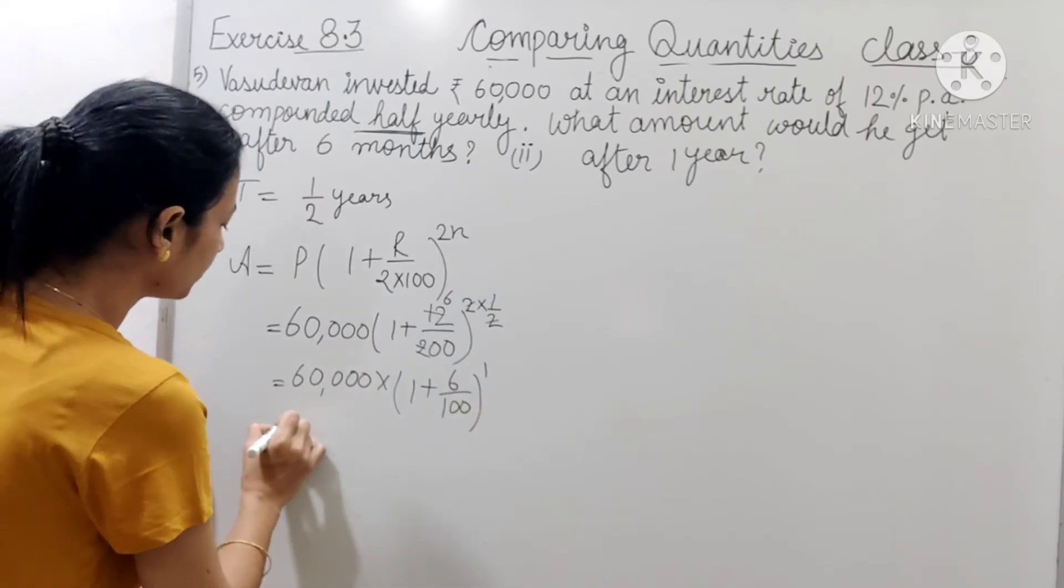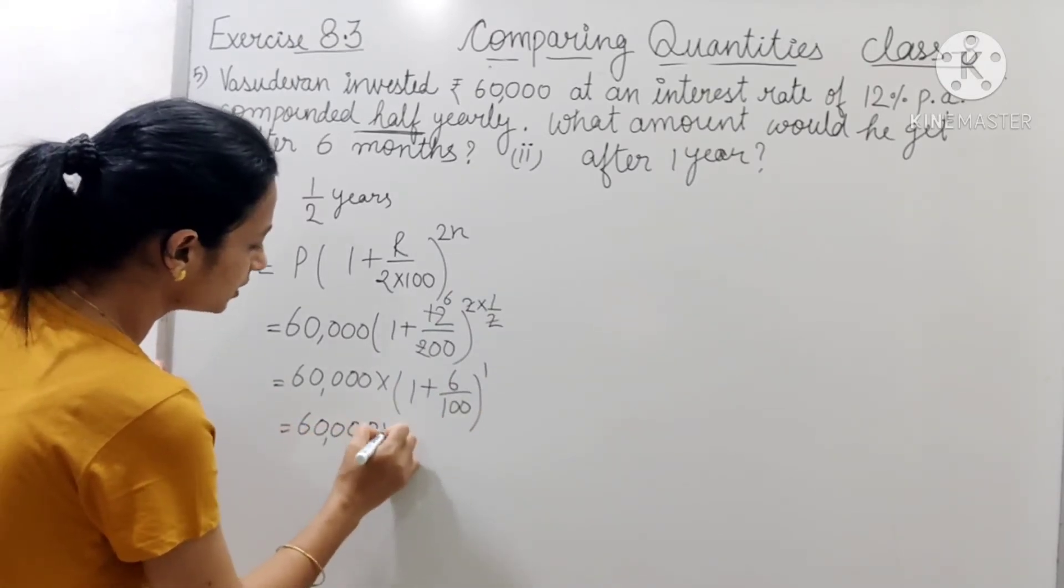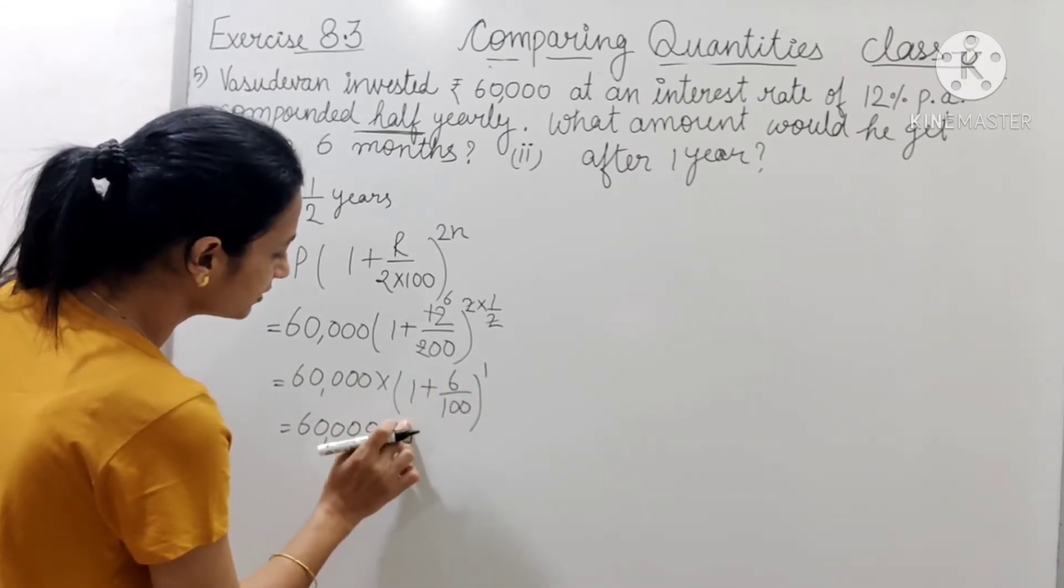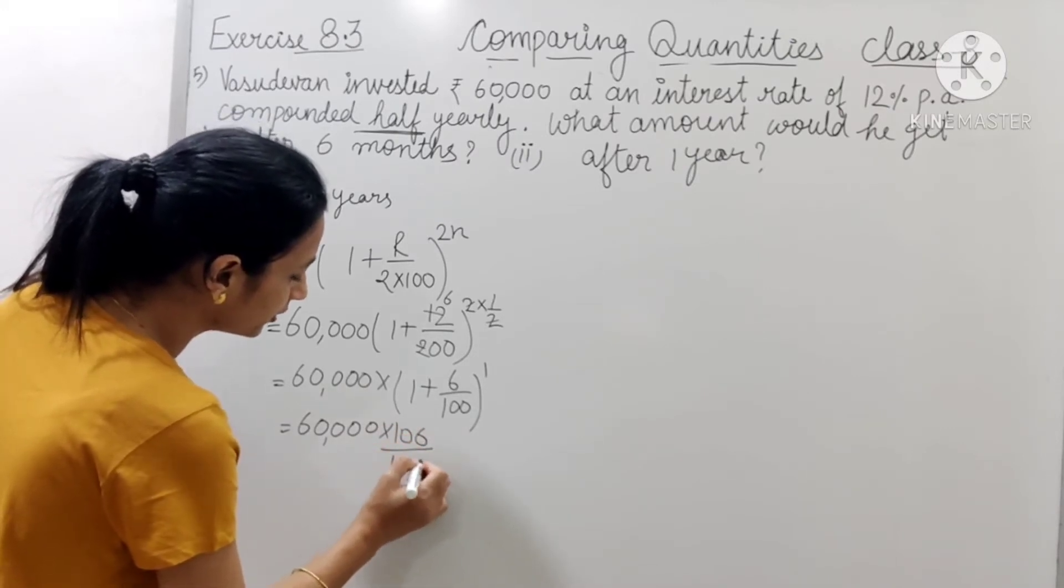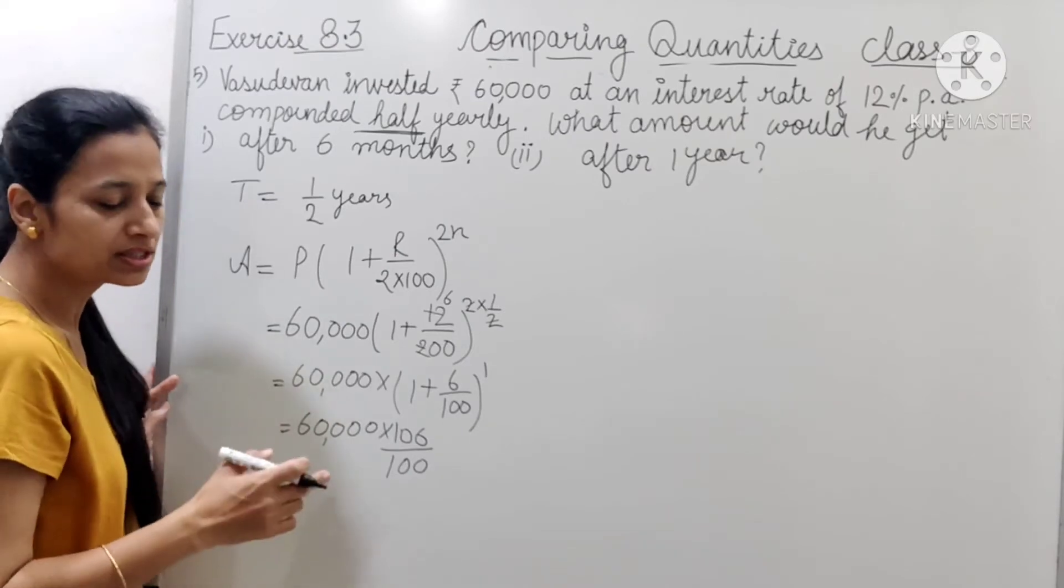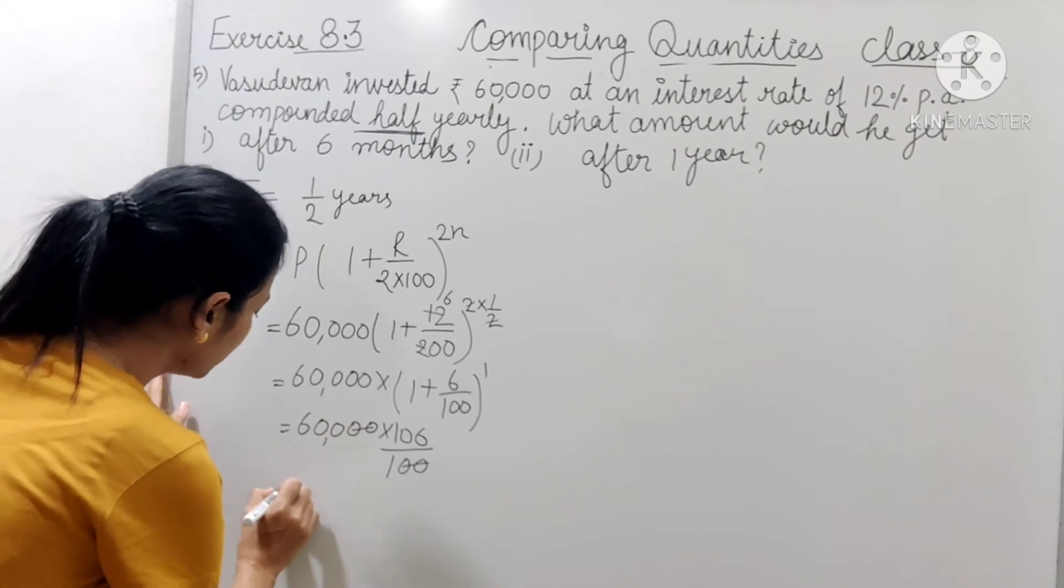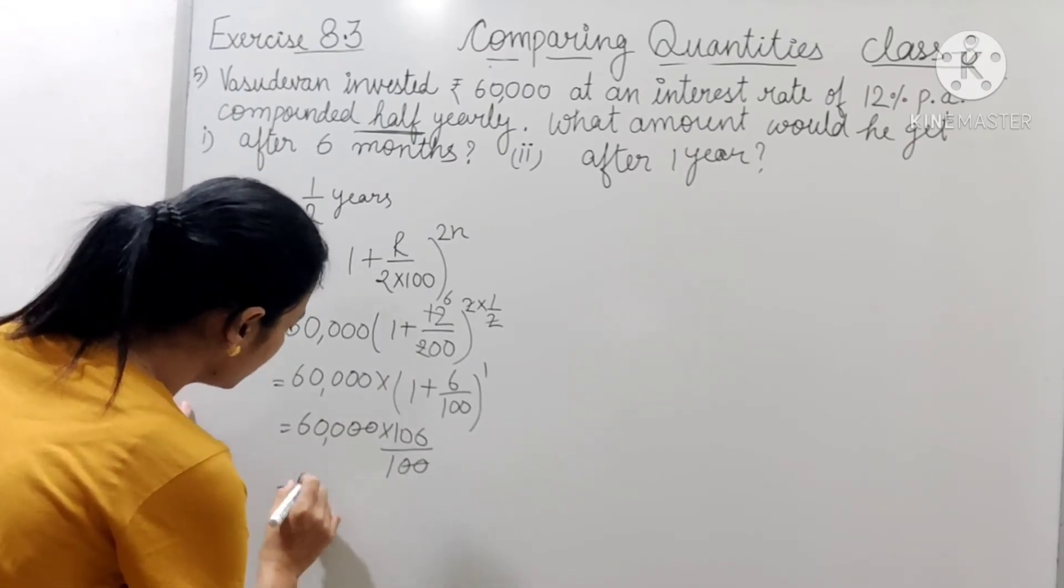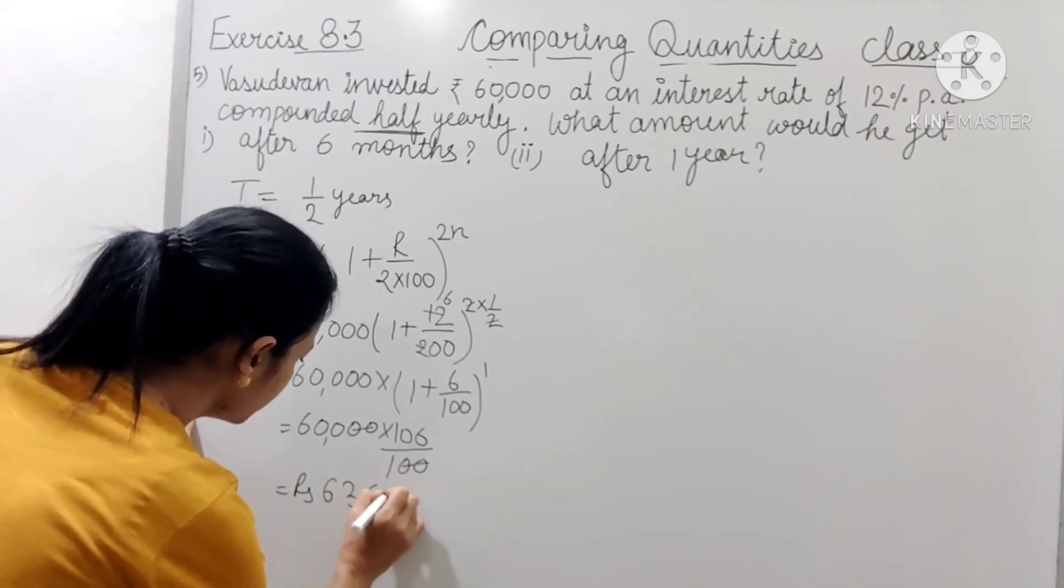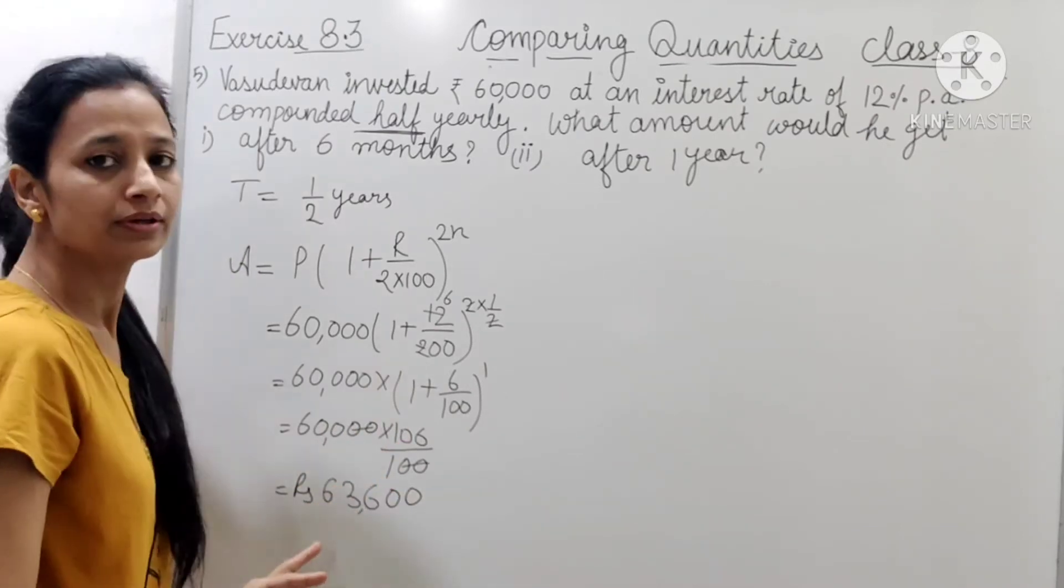2 se 2 cancel ho gaya. A equals to 60,000 into 106 upon 100. Kyunki aise 100 hone se, calculation karne me easy hota hai. Tho 2 zeros se 2 zeros cancel ho gayi, aur in dono ko multiply karenge. Tho kitna aaga hai? 63,600 rupees.